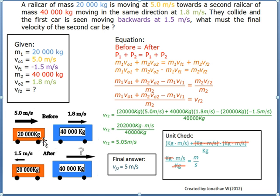We're given information about both the first and the second cars. The first car has a mass of 20,000 kilograms and an initial velocity of 5.0 meters per second. It has a final velocity of negative 1.5 meters per second because it is seen going backwards after the collision. The second car has a mass of 40,000 kilograms and an initial velocity of 1.8 meters per second. We're to find the final velocity of the second car.